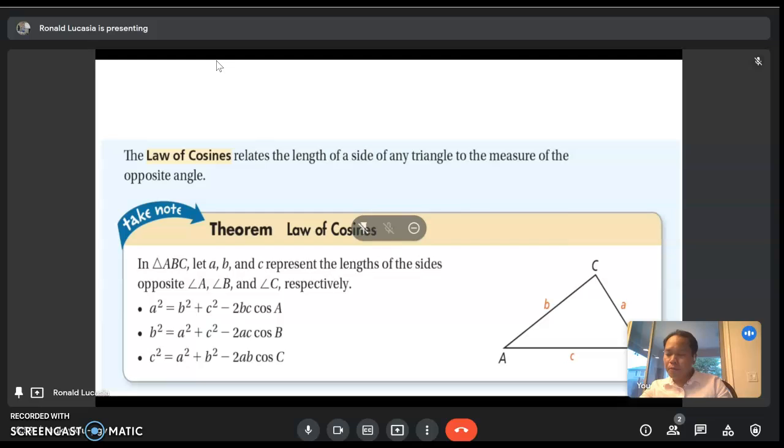Remember the lesson in geometry about SSS, or side-side-side, and SAS, or side-angle-side. We use those to determine a triangle. The Law of Sines does not enable you to solve such a triangle, but the Law of Cosines does.